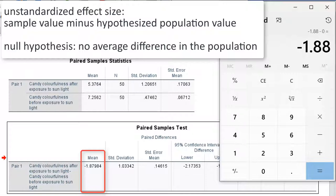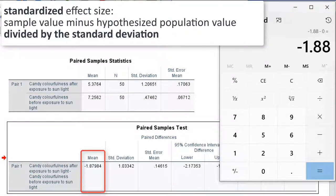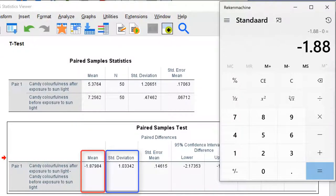To standardize it, divide by the standard deviation of the difference, which can be found in the next column. This yields minus 1.88 divided by 1.033, which is minus 1.82.